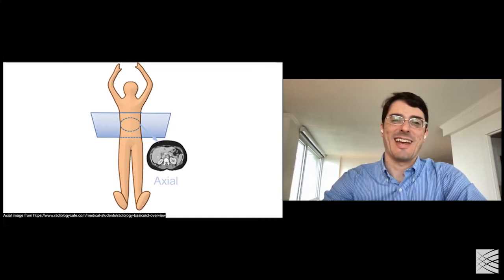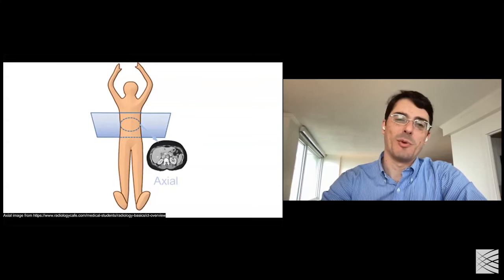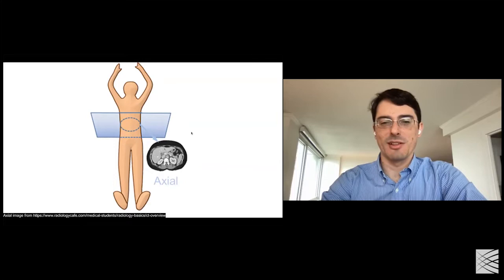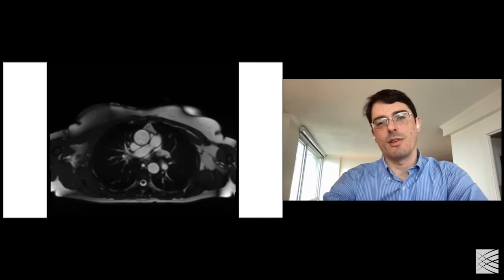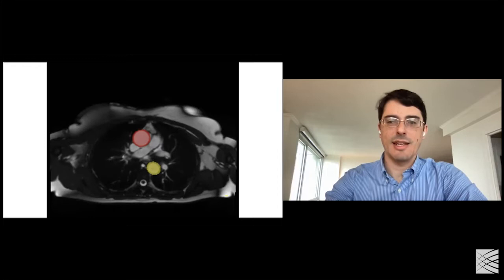I'm going to orient you to cross-sectional human imaging. When you're looking at an image of someone's body, imagine they're laying on their back and you're looking from their feet to their head. The views I'll be showing today are views of the thoracic ascending and descending aorta at the level of the right pulmonary artery. I'm highlighting the ascending aorta in red and the descending aorta in yellow.